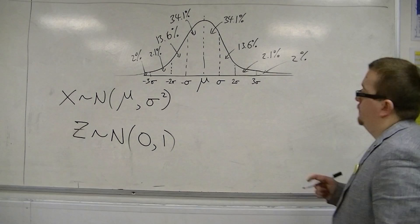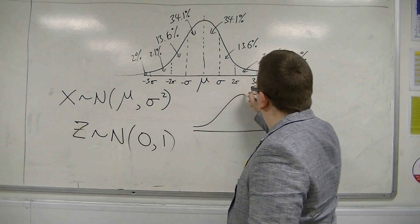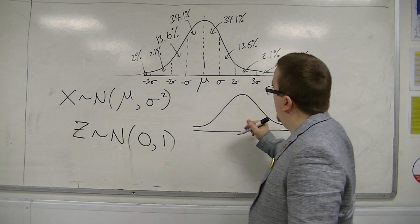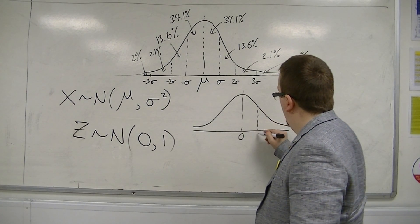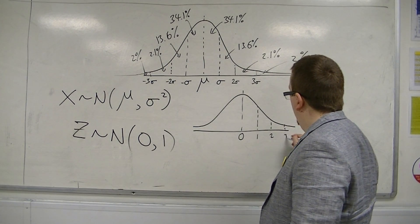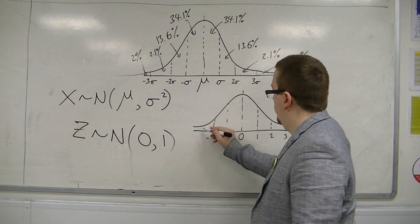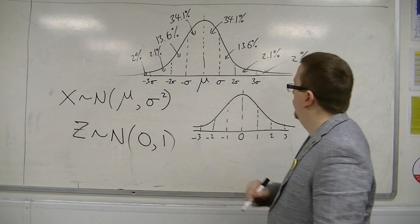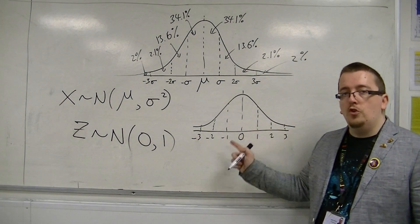So it would look something like this. There's 0, 1, 2, 3, minus 1, minus 2, minus 3. This would be the standardized normal curve.